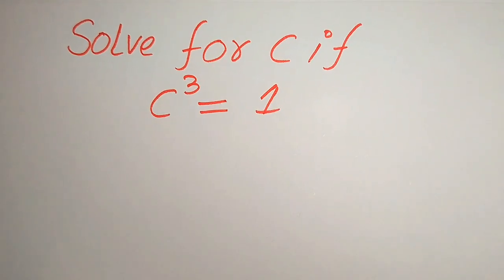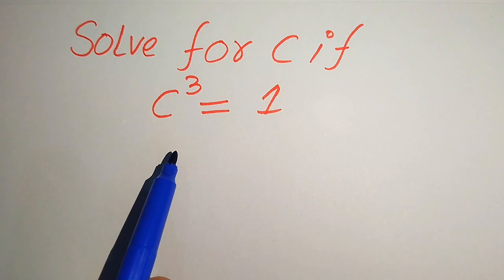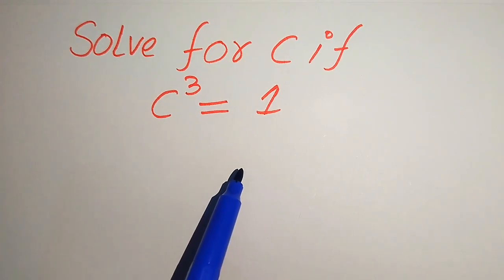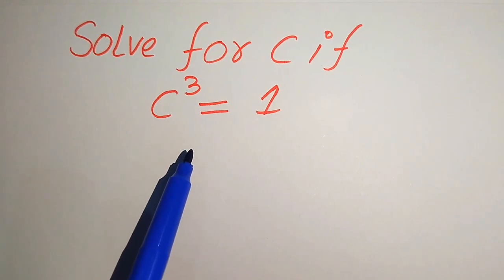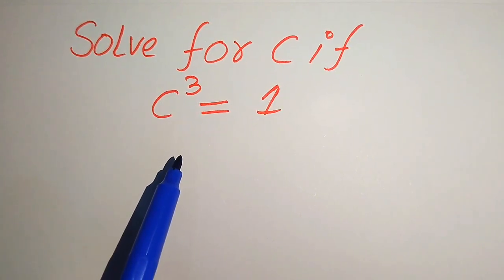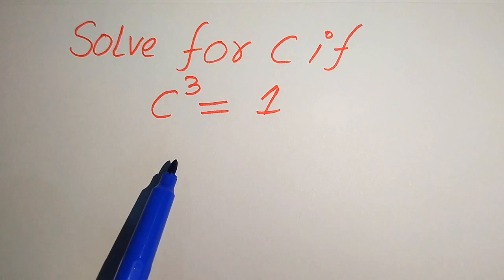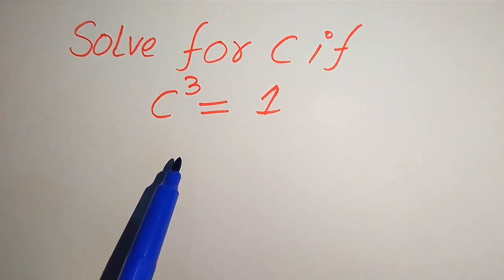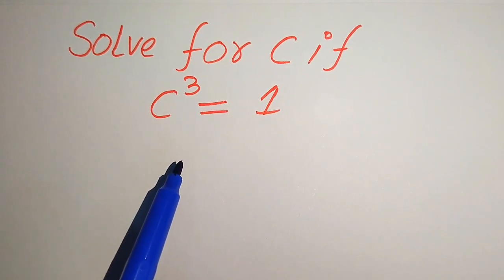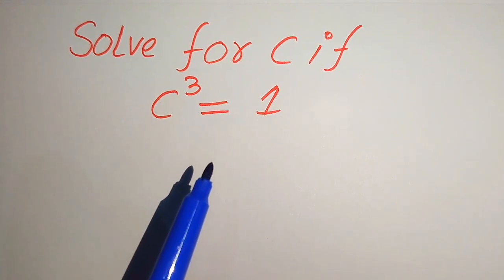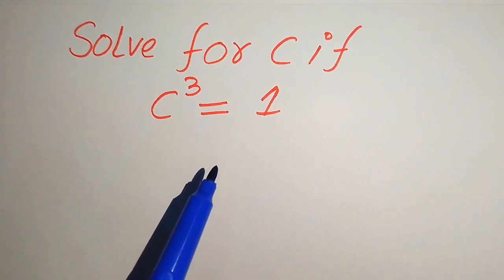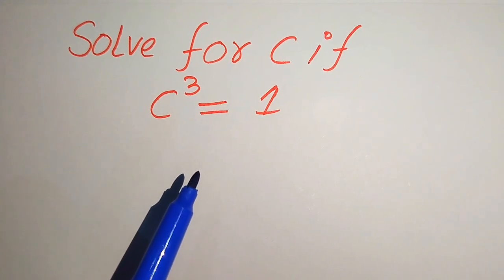Hello everyone, welcome to solve this nice math algebra problem. So here we have c cubed equals to 1 and we solve this problem for all the values of c. You see here this is the cubic equation, it means that this equation has 3 roots. Here we will find all of these 3 roots. If you have another method in mind, please don't hesitate to write it in the comment section.